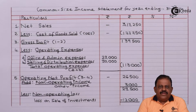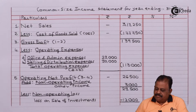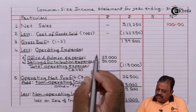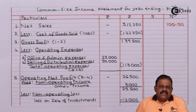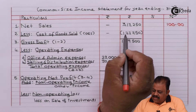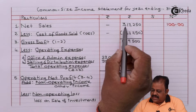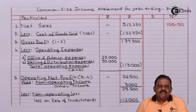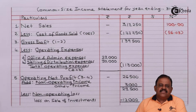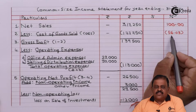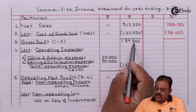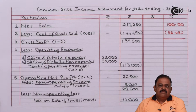For preparing the common size income statement, we are required to take net sales as 100. The procedure is simple — any value in the income statement can be converted into a percentage. For example, cost of goods sold: 1,77,750 divided by 3,17,250 multiplied by 100, which gives 56.03%. Gross profit: 1,39,500 divided by 3,17,250 multiplied by 100.